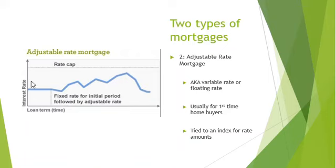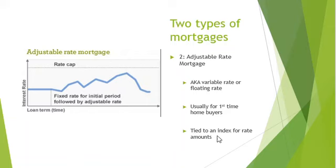This is a graph that illustrates it pretty well. Usually for the initial rate period — roughly three months to ten years — the rate is pretty fixed. After that, it follows an index to determine the rate of interest you pay, so you can see it goes up and down. They usually advertise this for first-time home buyers because in the beginning you don't pay as much, but it's kind of a gamble — you never know exactly what you'll end up paying.